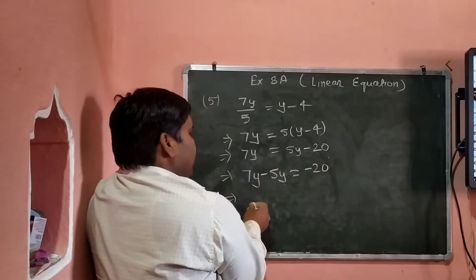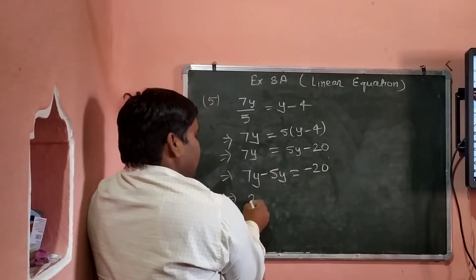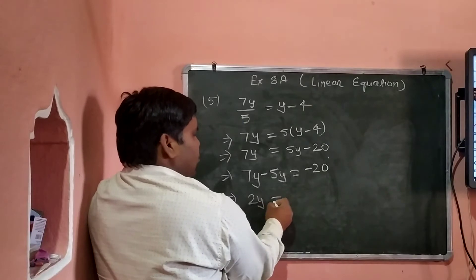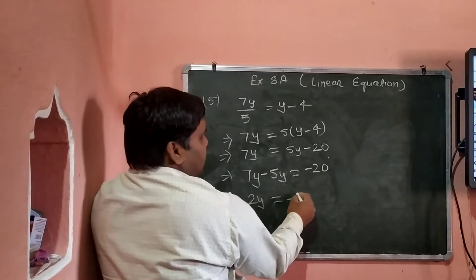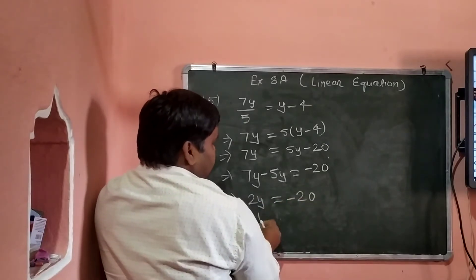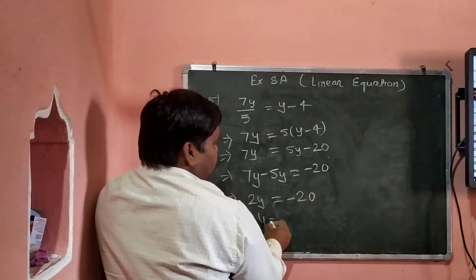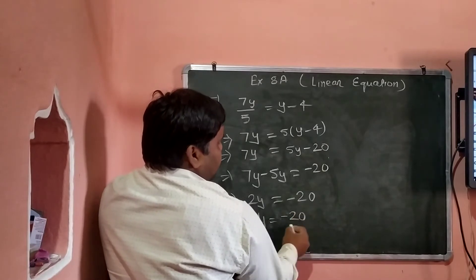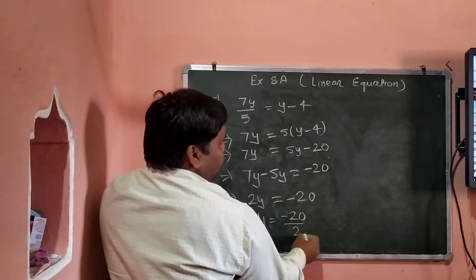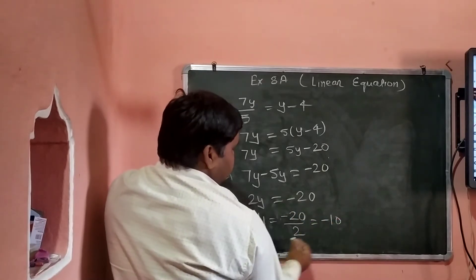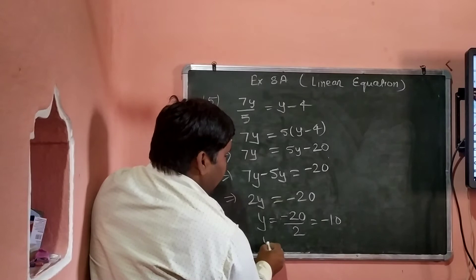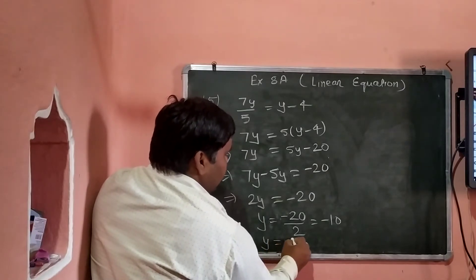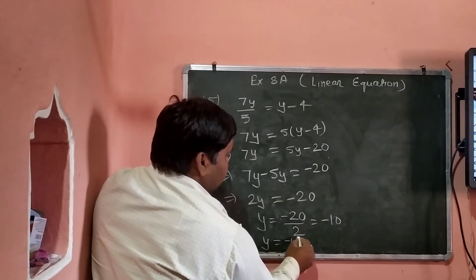7y minus 5y = 2y। 2y equal to minus 20, तो 2y = minus 20 upon 2, कितना हो गया? minus 10. What do we have? y equal to minus 10.